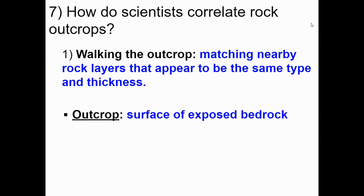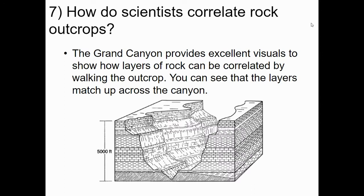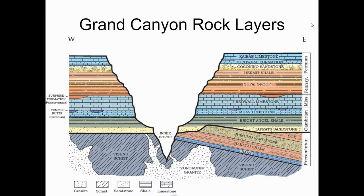The way we actually correlate rock layers is by using four different methods. The first is walking the outcrop — matching nearby rock layers that appear to be the same type and thickness. An outcrop is simply a surface of exposed bedrock. A great place to visualize this is at the Grand Canyon, because it provides excellent visuals showing how layers of rock can be correlated by walking the outcrop — you can see the layers match up across the canyon.